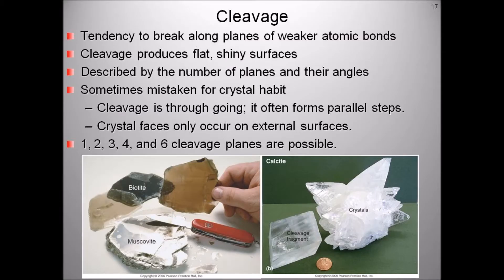Cleavage in mineralogy describes the flat, smooth planes that form when minerals break along planes of weak bonding. When a mineral has cleavage and is broken, it will always resemble the larger broken piece. Calcite has three directions of cleavage that form rhomboid-shaped fragments. Mica minerals split into very thin, transparent sheets along a single plane of cleavage. A calcite crystal is hexagonal, six-sided, but when broken forms a rhomboid — a parallelogram in which adjacent sides are of unequal lengths and angles are non-right angle.